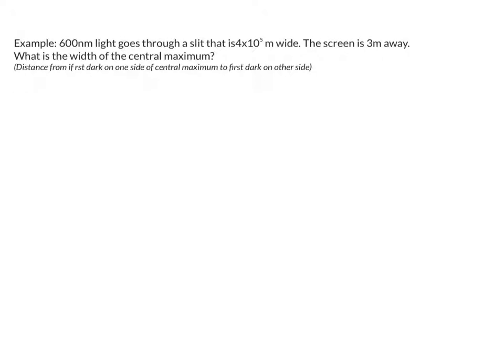A typical example: we'll talk about how wide the central maximum is. To measure the central maximum, we're going to go from a dark on one side of that first bright spot to a dark on the other, the first dark on the other side of that bright spot.